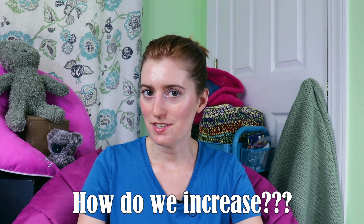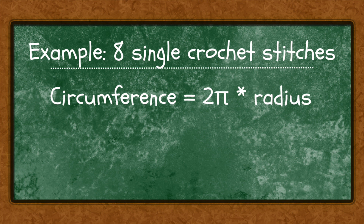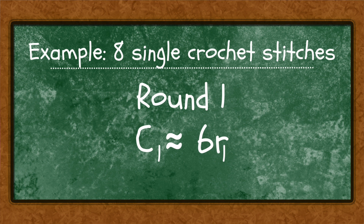Now that you know you can create flat circles using the wrong numbers, you might be thinking: how do we do the increases? Let's look at what the math tells us, using a single crochet circle where we're working eight stitches. Because we're working eight stitches we're using a slightly smaller hook to make stitches narrower so all eight fit and lie flat. We use the formula: circumference equals six times the radius. Round one's circumference is six times the radius of round one.